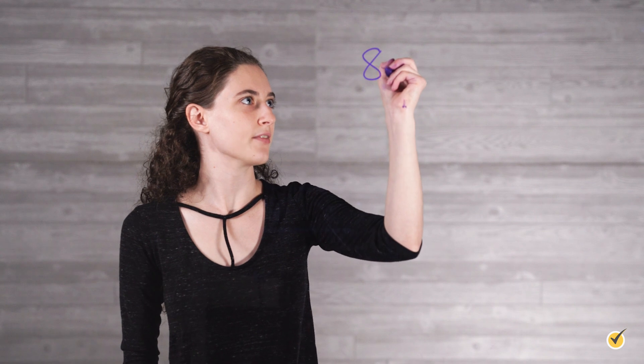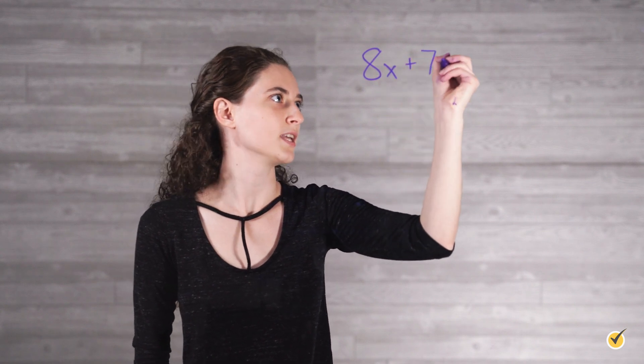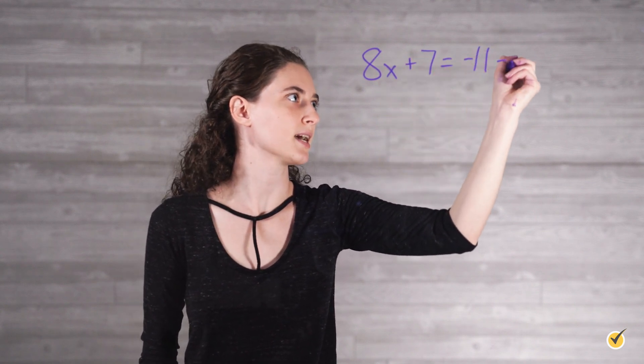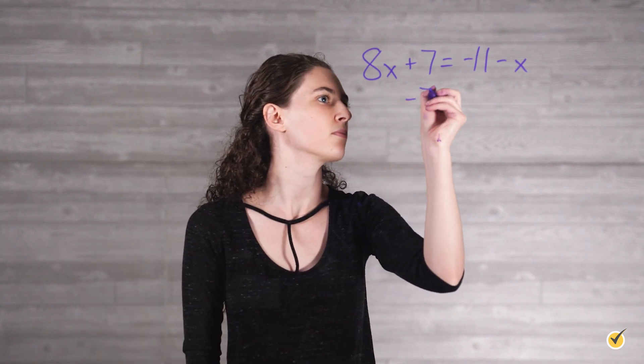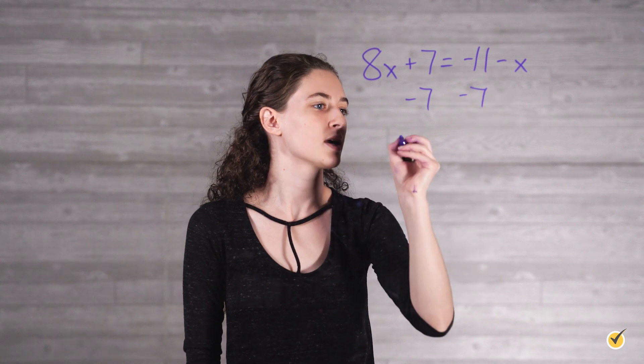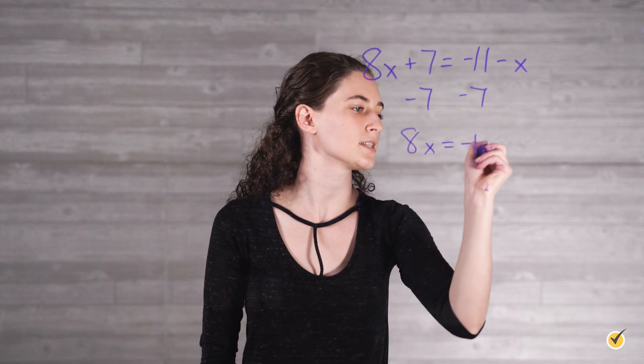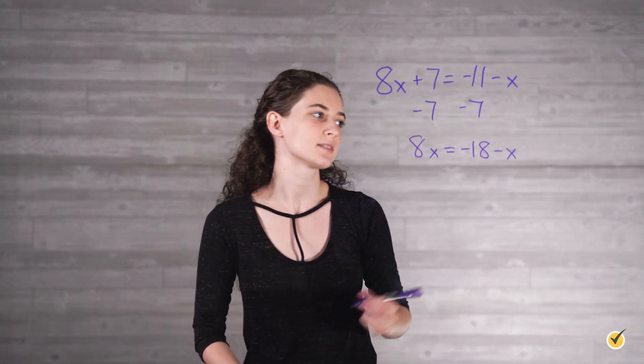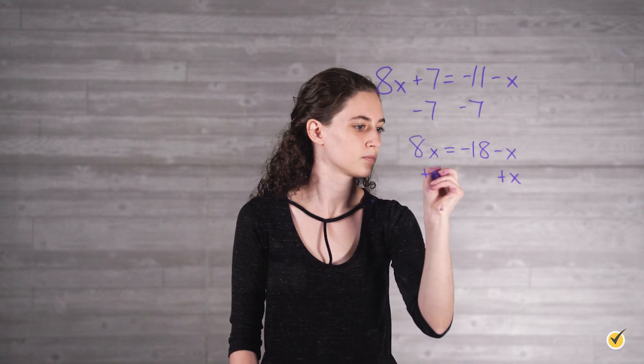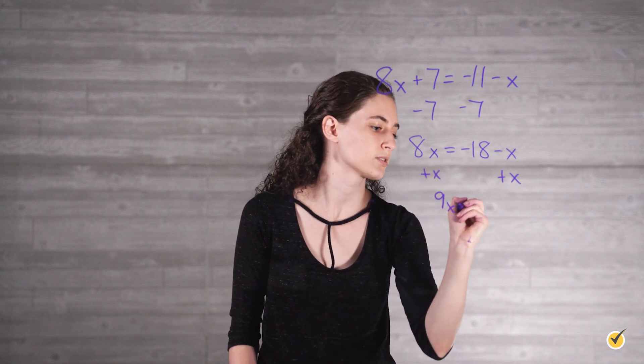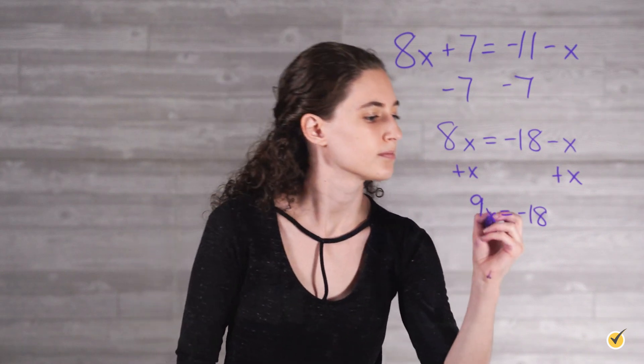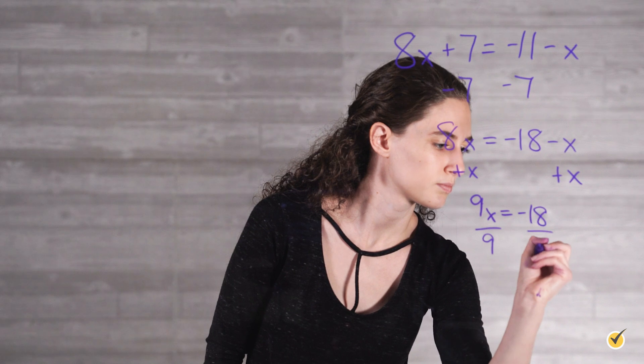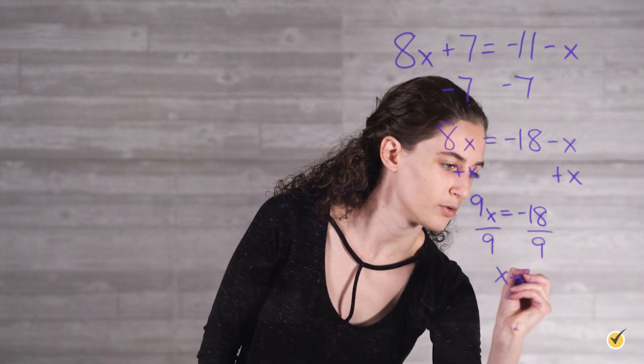Solve 8x plus 7 equals negative 11 minus x. Make a 0 by subtracting 7 from both sides: 8x equals negative 18 minus x. Make another 0 by adding x to both sides: 9x equals negative 18. Make a 1 by dividing both sides by 9: x equals negative 2.